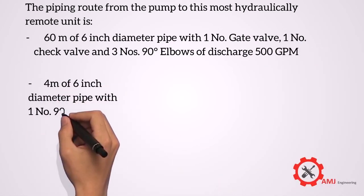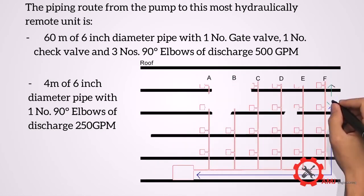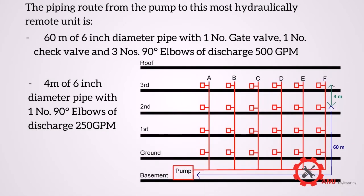The flow is 500 GPM, which is the required 250 at each of the two remote connections, and four meters of six inch diameter pipe with one 90 degree elbow of discharge 250 GPM.